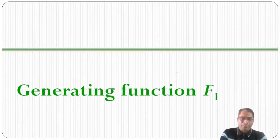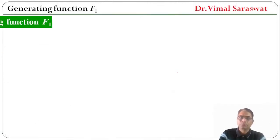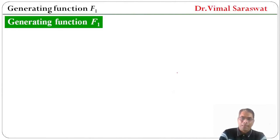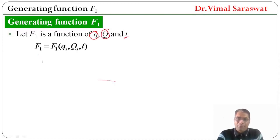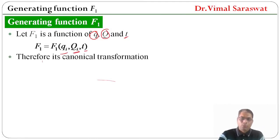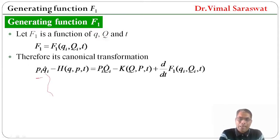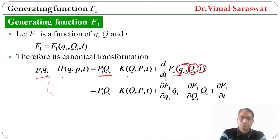Now, generating function F1. Let F1 be a function of old coordinate, new coordinate, and time — it means F1 is a function of small q_i, capital Q_i, and t. Therefore, its canonical transformation is given by: p_i q_i_dot minus H equals capital P_i Q_i_dot minus K plus d/dt of F1, where F1 is a function of old coordinate, new coordinate, and time.